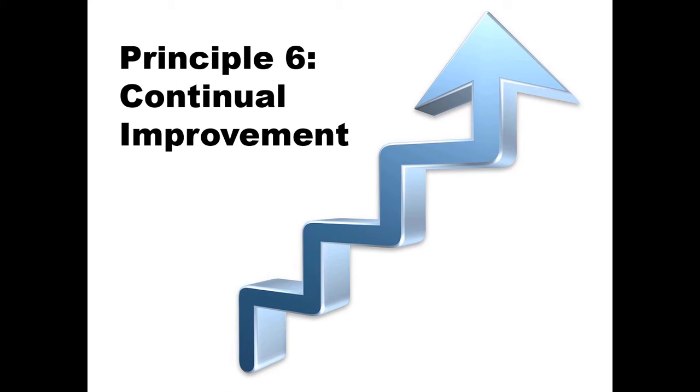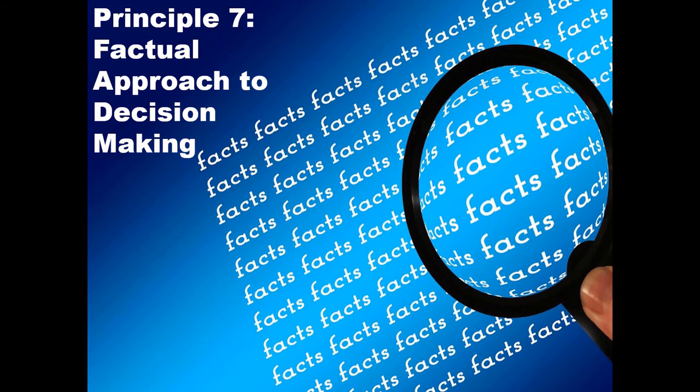Principle seven is about factual approach decision making. Decisions based on analysis and evaluation of data and information are more likely to produce desired results. Facts, evidence, and data analysis lead to greater objectivity and confidence in decision making.